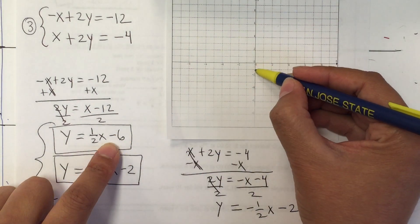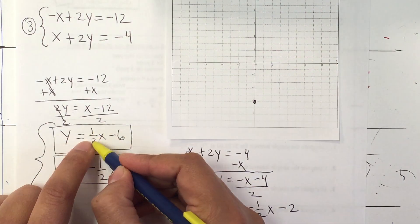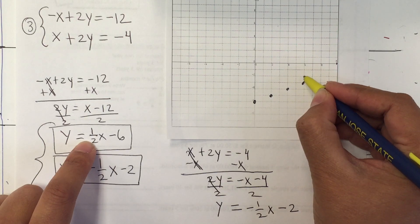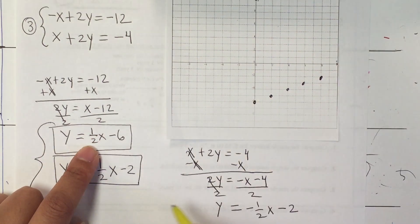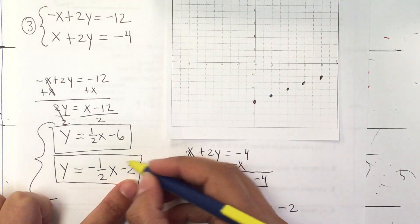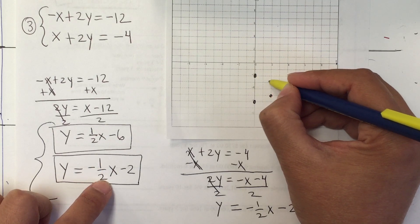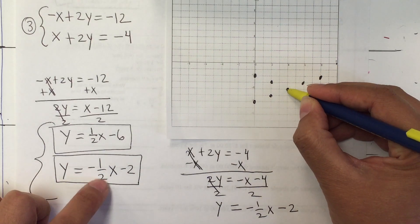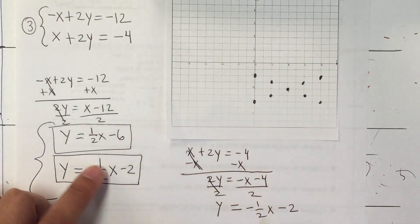The initial point of the first equation is negative 6 — going down to negative 6 — and then slope 1/2: up 1, 2 to the right, up 1, 2 to the right, repeatedly. Note: I only place points when I complete both the rise and the run, not midway. The next equation has initial point negative 2. Slope is negative 1/2: down 1 and 2 to the right. Down 1 and 2 to the right — and that's where they're going to meet. Those are my two lines and that's my solution right there.